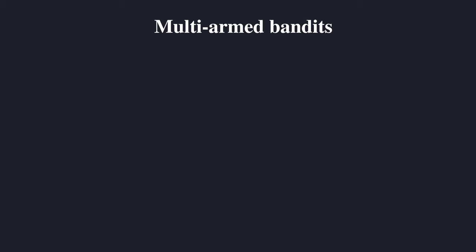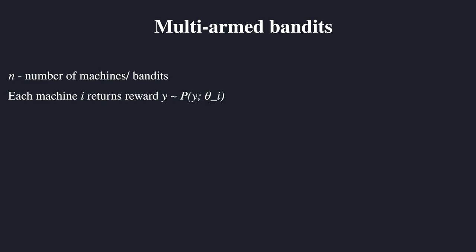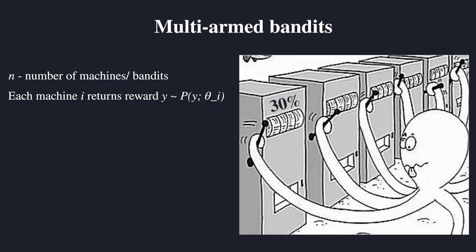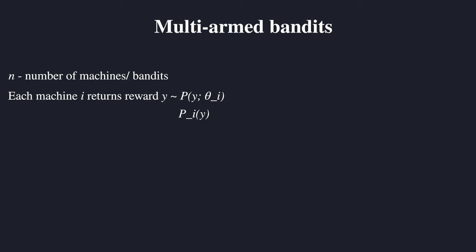Now to get back to our bandits, let's describe our situation a bit more formally. Let's say we have N machines. Each machine i then returns a reward Y with a certain probability. This theta_i is a constant parameter that defines the probability distribution for winning a prize, which is unknown to us. You can imagine this parameter as a setting in the machine — machine A has a 30% probability of winning, machine B has 40%, and machine C has 50%. But the agent doesn't know this parameter. Without it, we can simply say this is the probability of machine i to win prize Y and ignore this parameter.